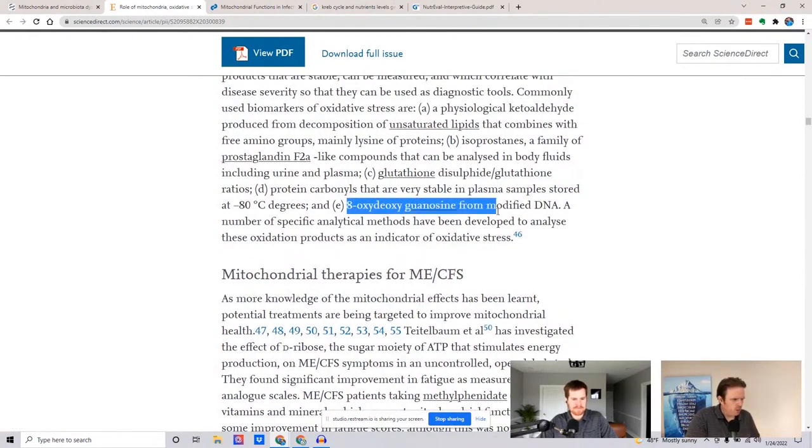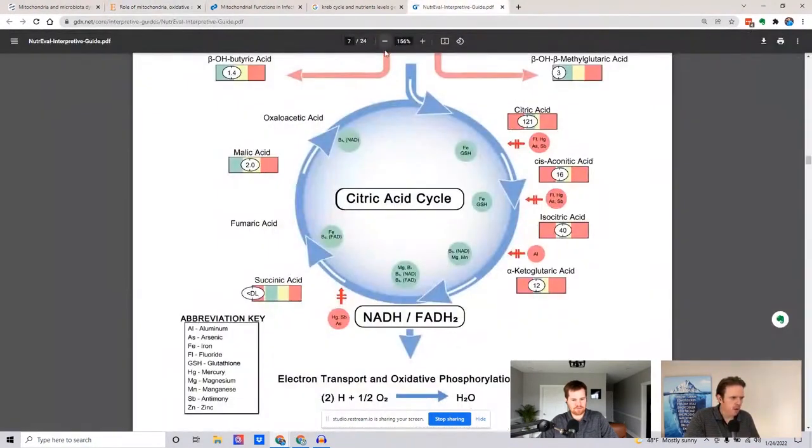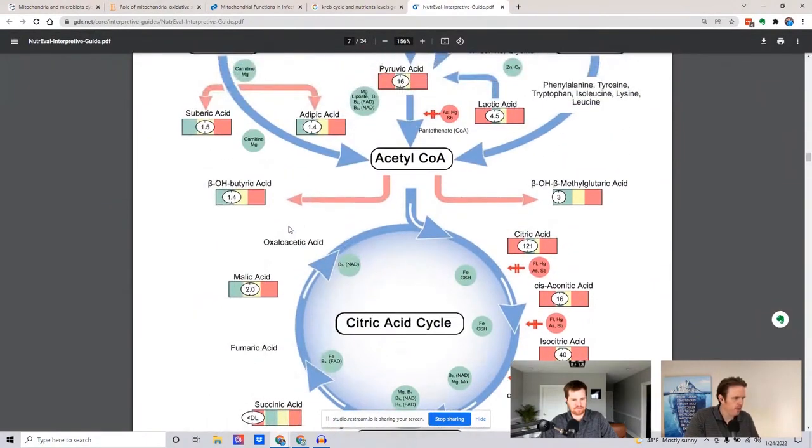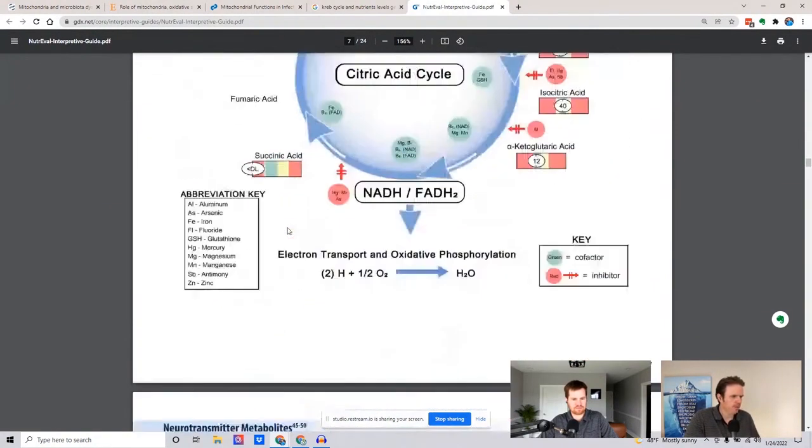This is a similar marker that we use on the organic acid test. The one that we use is 8-hydroxy-2-deoxyguanosine. This is very similar to that. But this is a marker for oxidative stress. So we'll actually use this same marker on a mitochondrial test on the organic acid. We'll look at some of these things to get a window of how stressed these pathways are.